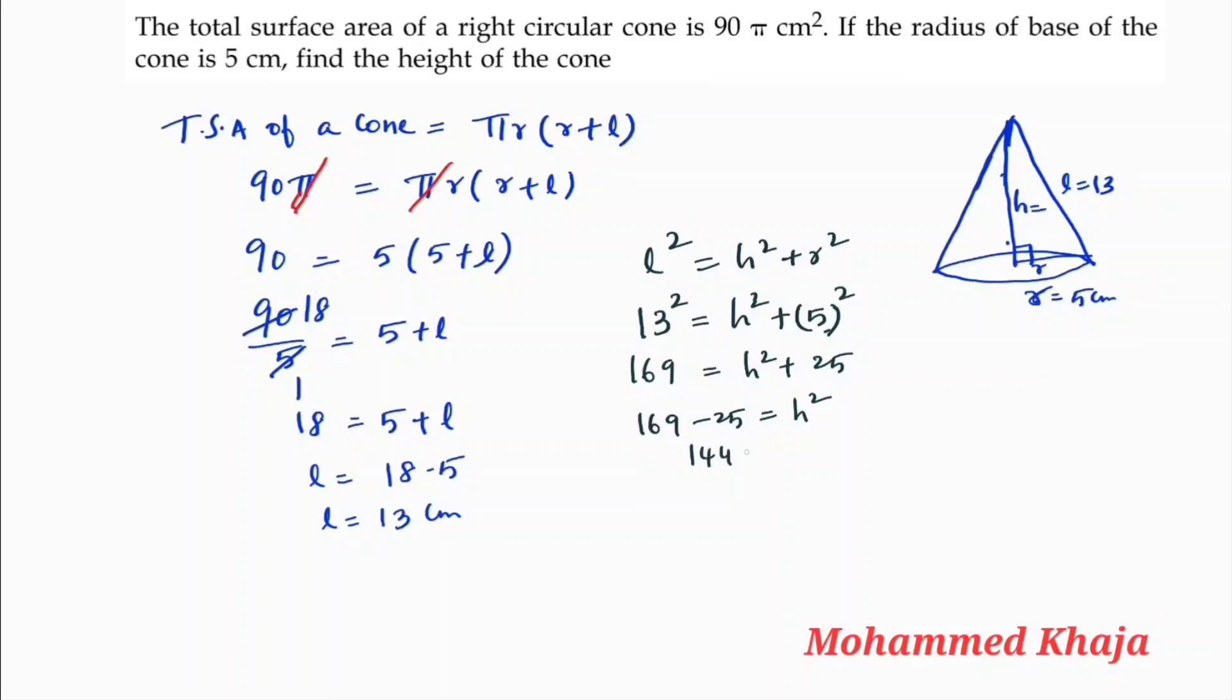equals h². So 144 = h², which means h = √144 = 12 centimeters. Therefore, the height of the cone is 12 centimeters.